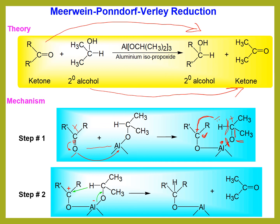So, after completion of this second step, we can see there is a formation of a ketone which corresponds to the reacting secondary alcohol, and aluminum and the ketone form another type of complex here.